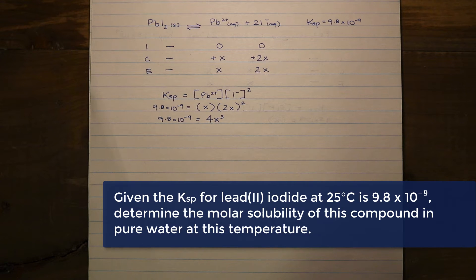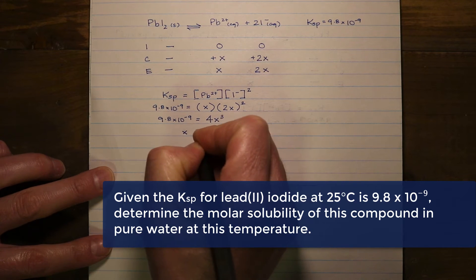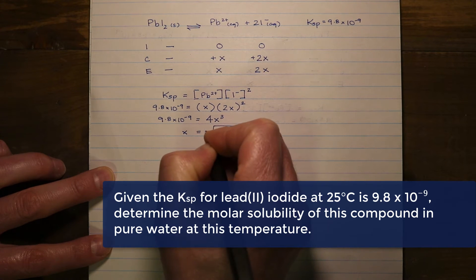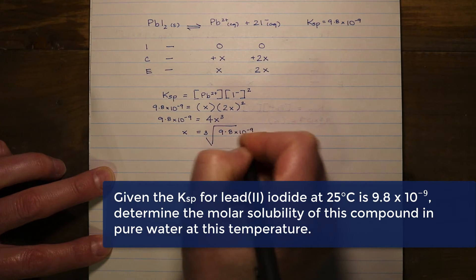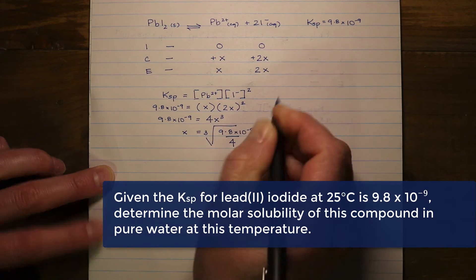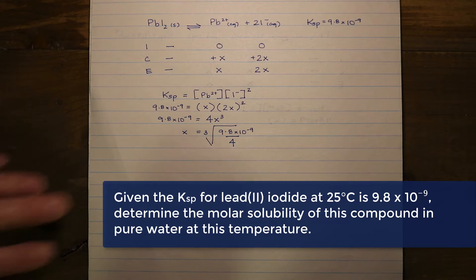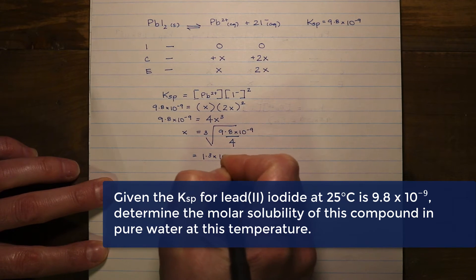Combining a couple of steps, we solve for x directly. x equals the cubed root of 9.8 times 10 to the negative 9 divided by 4. We divide both sides by 4 first, then take the cubed root of both sides, giving us a value of 1.3 times 10 to the negative 3.